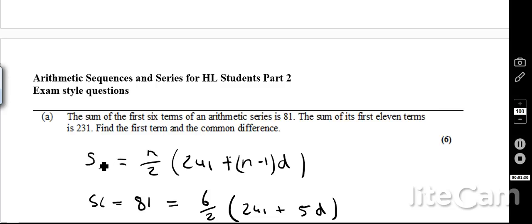Okay, so you can see that the very first thing to do is to write down the Sn formula, so that Sn equals n over 2, 2u1 plus n minus 1d.